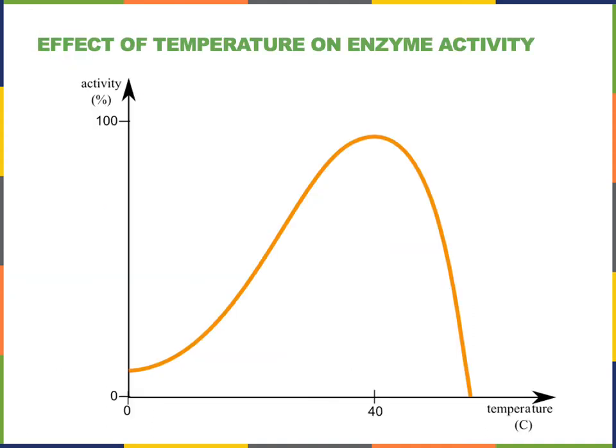Temperature influences the activity of an enzyme. This graph shows the activity of the enzyme — represented as percentage of maximal activity on the y-axis — and temperature of the enzyme's environment on the x-axis. Enzymes will have the highest activity at an optimal temperature. If the temperature is lower than the optimal, there will be a lower rate of the chemical reaction. This is largely related to the decreased kinetic energy of molecules — as molecules move more slowly, it takes longer for them to bind to the active site of the enzyme.